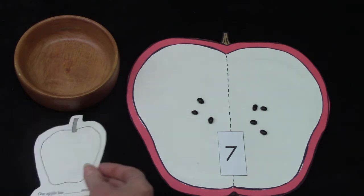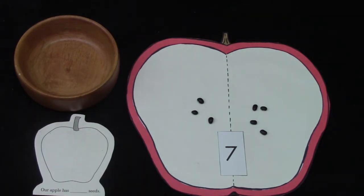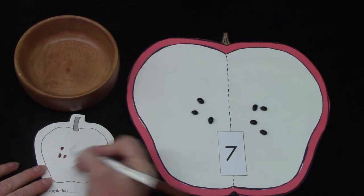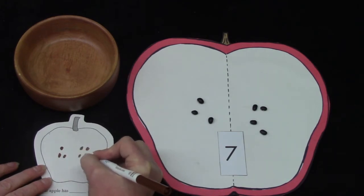Well let's picture that. Here I have my little apple. And I am going to draw three seeds on this side. And how many on this side? One, two, three, four.